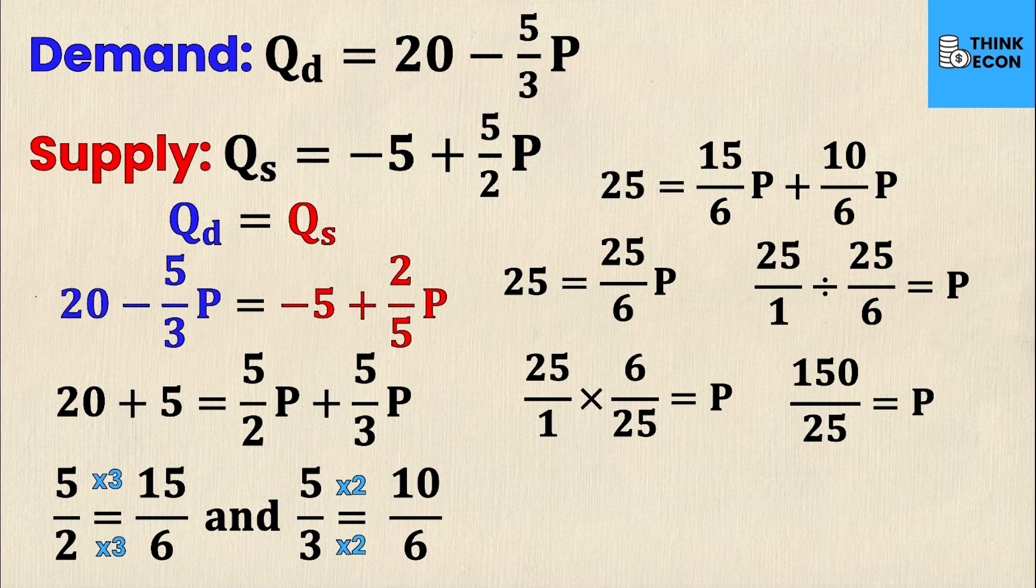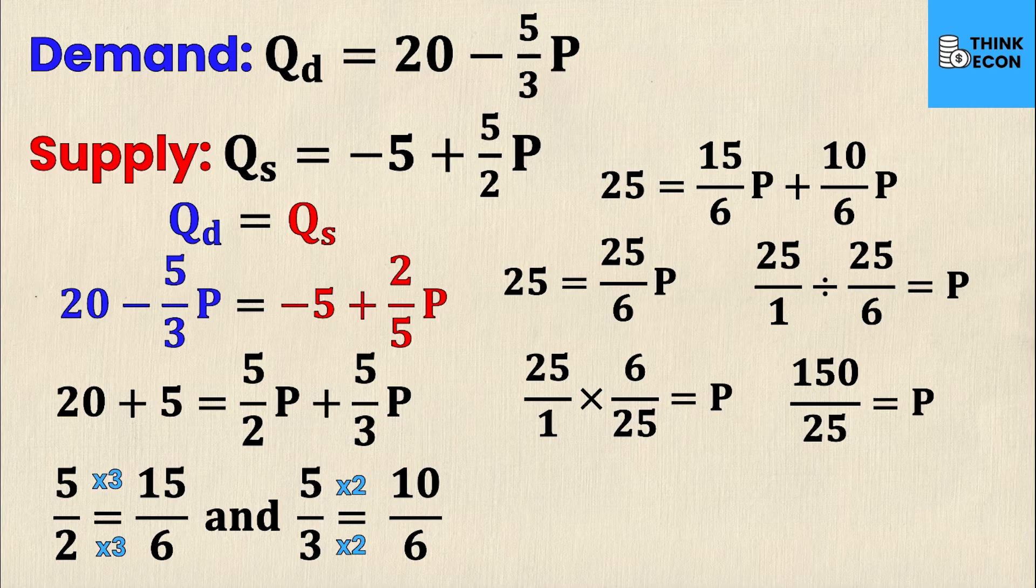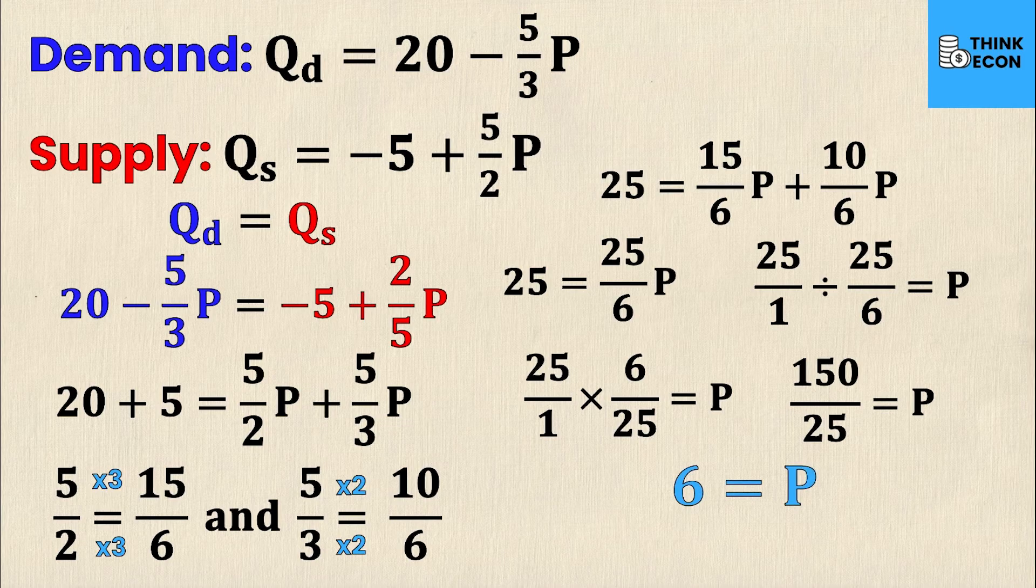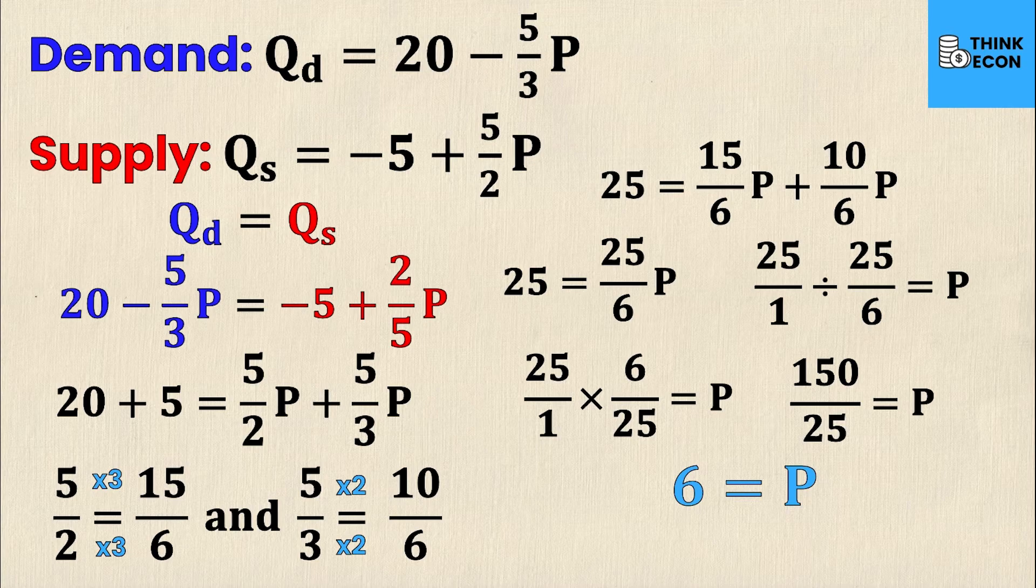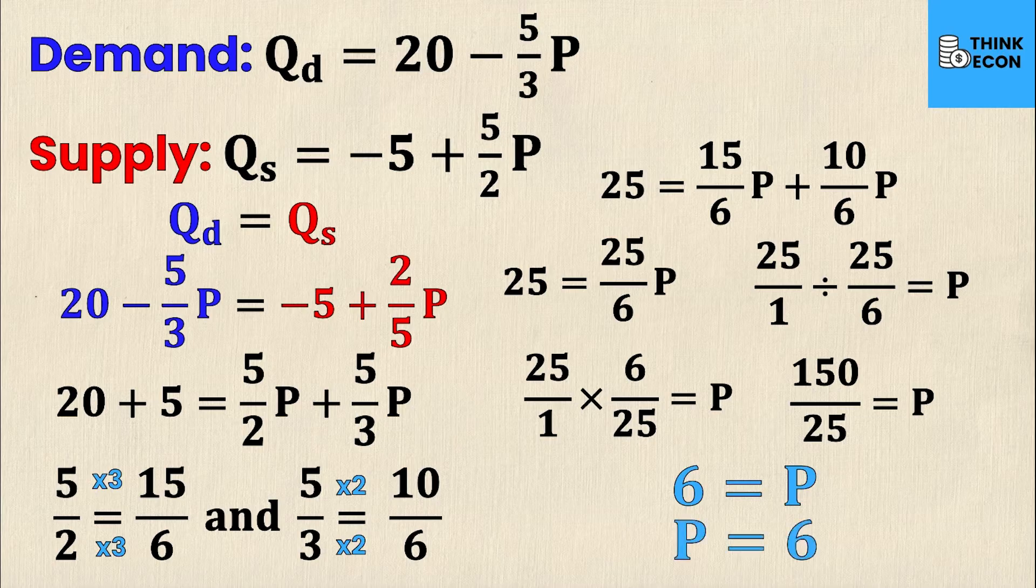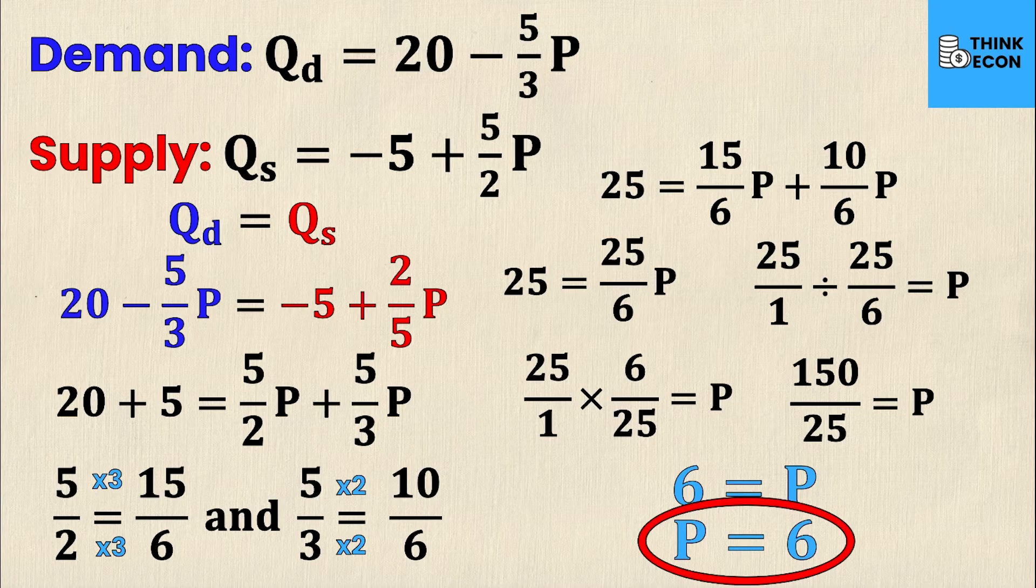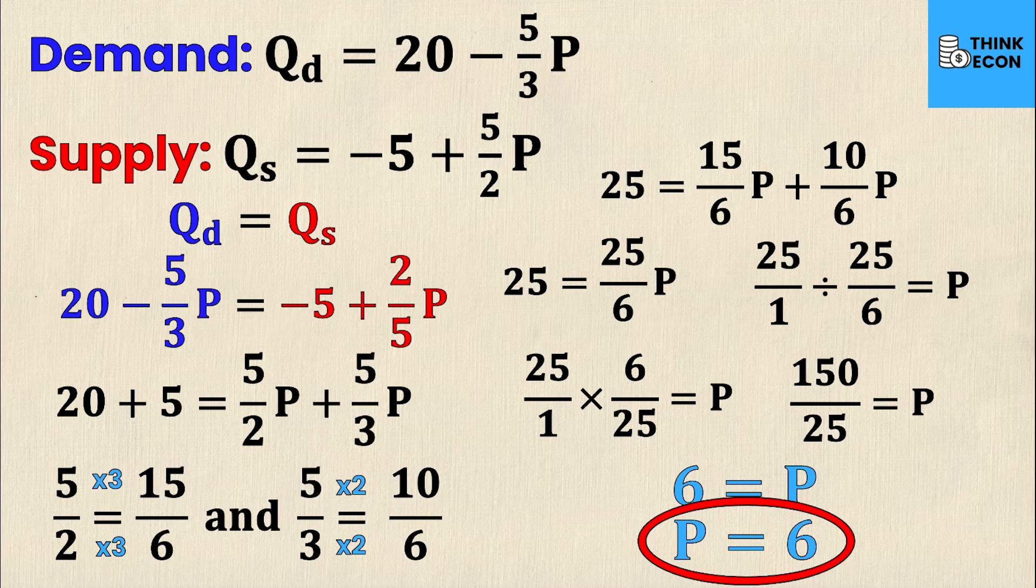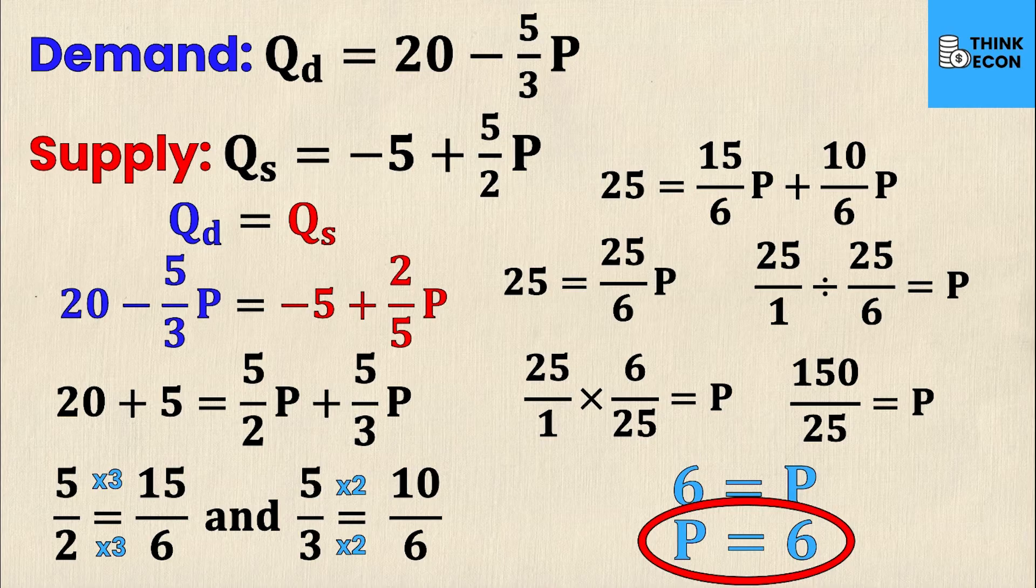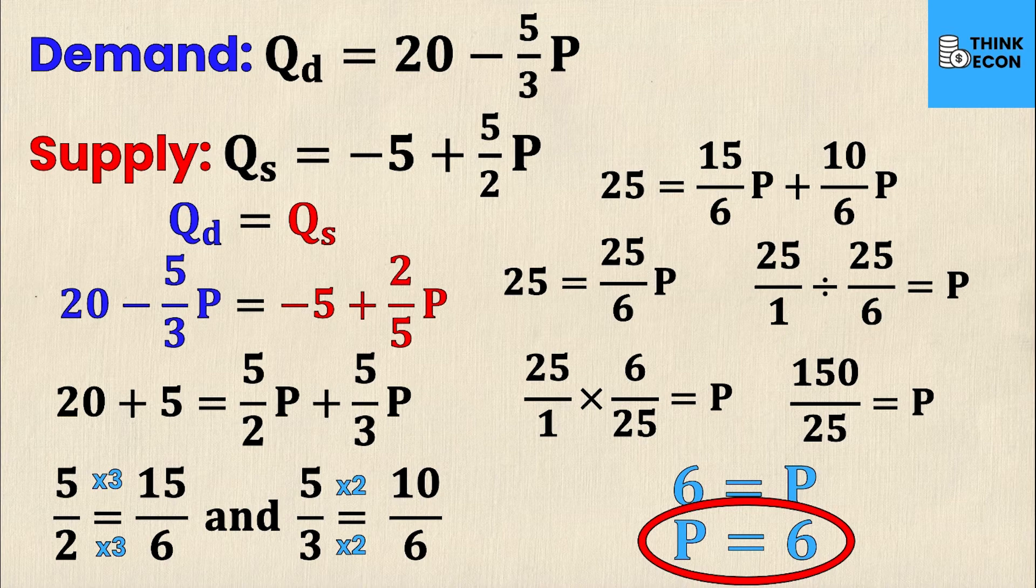So my next line is 150 divided by 25 equals P. Then finally, I can just do that division on the left side to get a value of 6 equals P, or P equals 6. That right there is my equilibrium price. I'm going to leave this on the screen for just a second so you have an opportunity to write it down and check over these steps. If there's any part that you found confusing, please feel free to leave a comment.